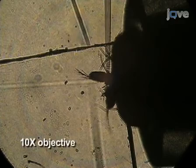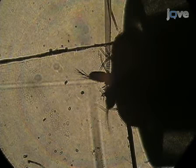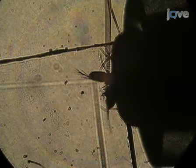At low magnification, position the antenna roughly in the middle of the field of view. Gently lower the reference electrode and position it adjacent to the eye. Then, lower the recording electrode and position it adjacent to the antenna.